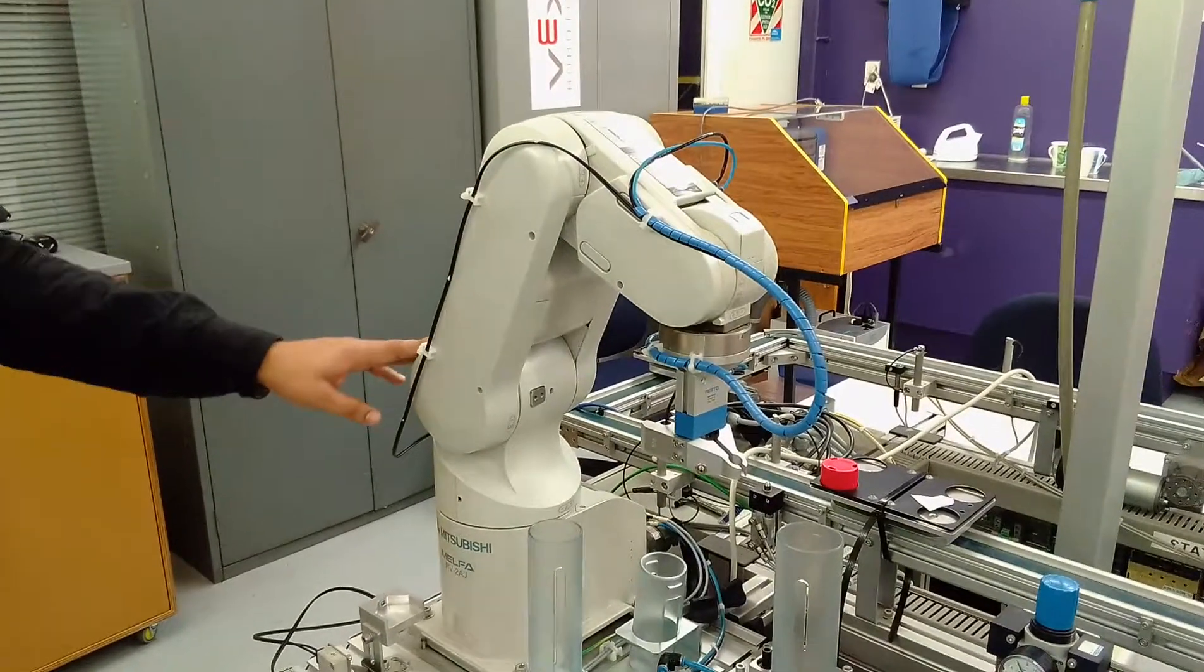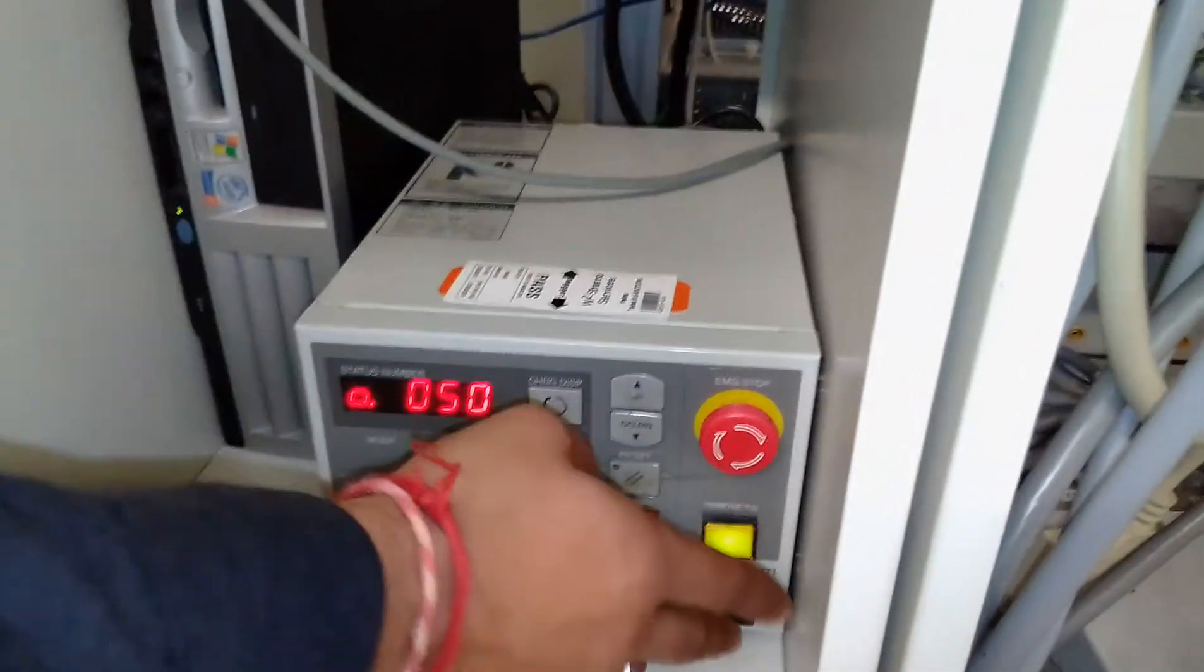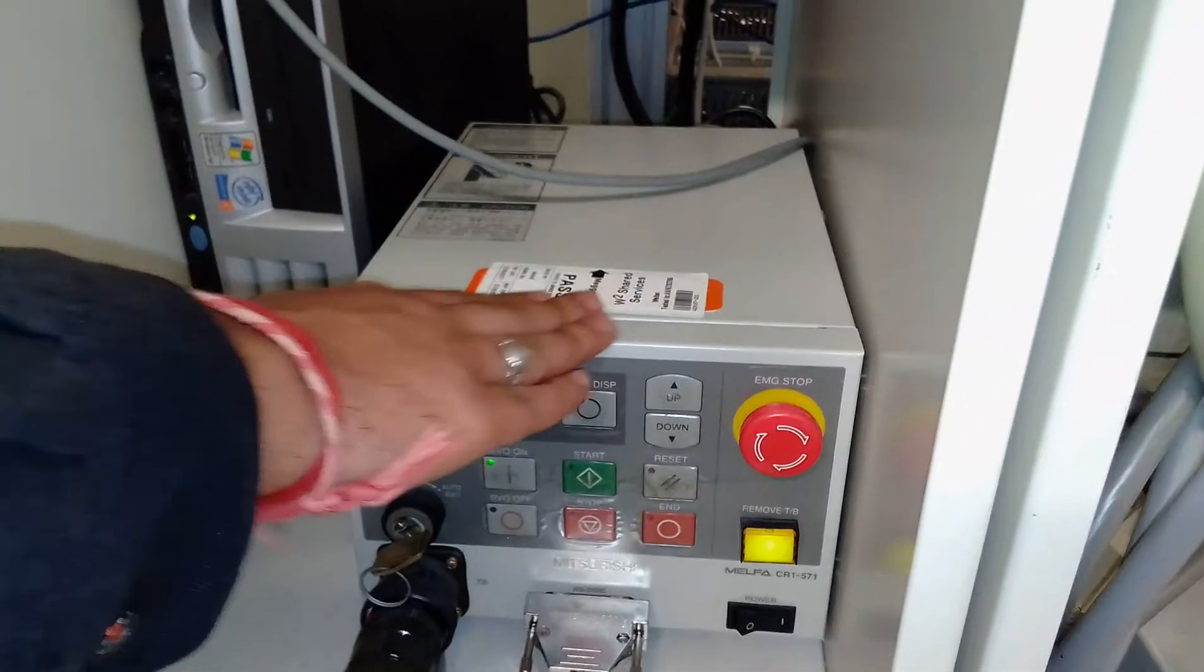This is basically connected to the controller. This is the controller, it has an emergency button. The emergency button is to stop the robot in an emergency.